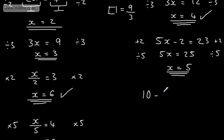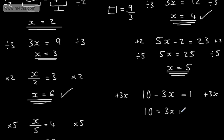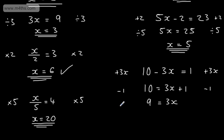Let's try 10 minus 3x is equal to 1. What I'm looking to do here is get 3x by itself. Since I've got subtract 3x, I'm going to add 3x to both sides of the equation. That gives me 10 is equal to 3x plus 1. Don't worry that it's now on the right-hand side — you could just rewrite it on the left. I just want this term by itself, so I'm going to subtract 1 from both sides. 10 minus 1 is 9, and that leaves me 3x. So 3x is equal to 9. I'm going to divide both sides by 3, which gives me 1 lot of x equal to 3.